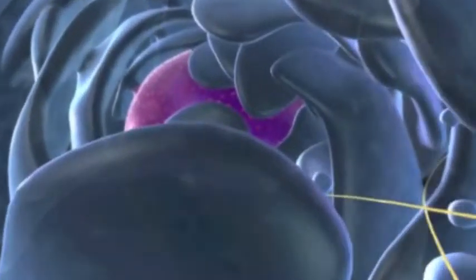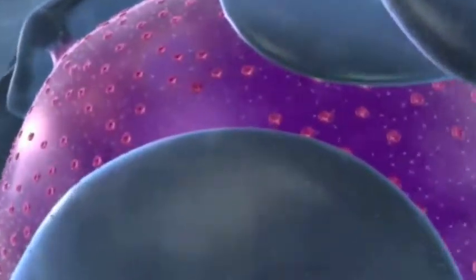Let's move into a cell to witness the events of mitosis. Before a cell can divide, it must first duplicate the chromosomes stored in its nucleus.